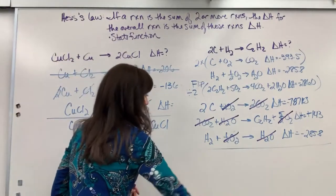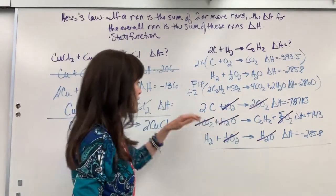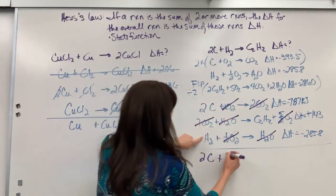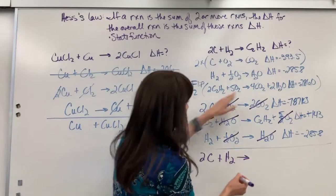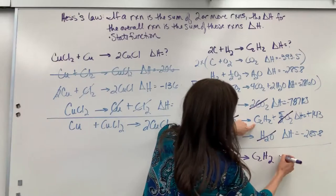Now let's add up what's left over. Everything on the reactants, everything on the products. I have 2C plus H2 yields C2H2. Delta H.